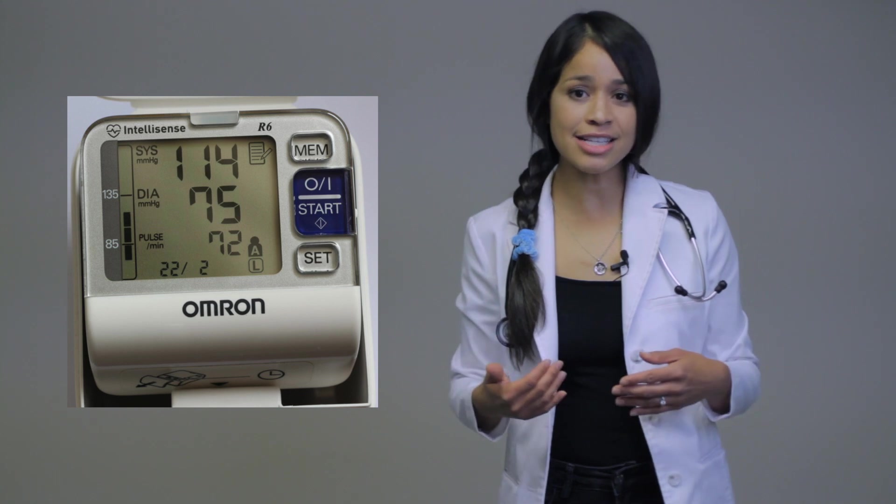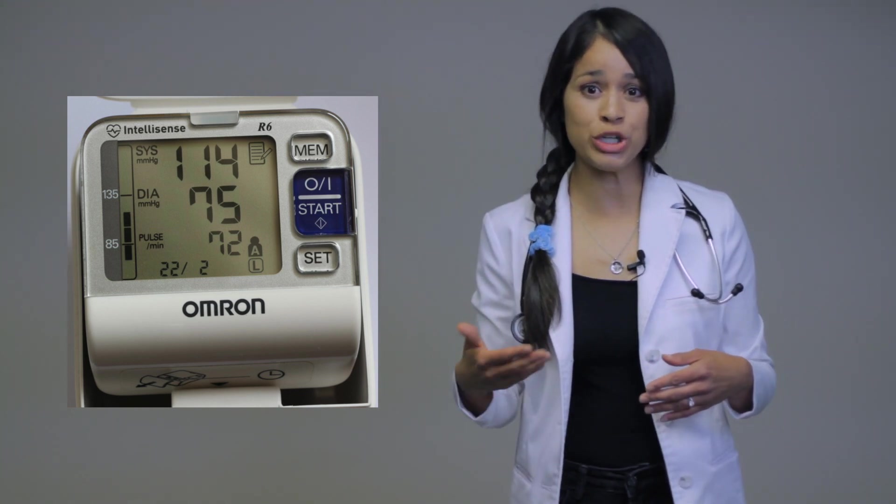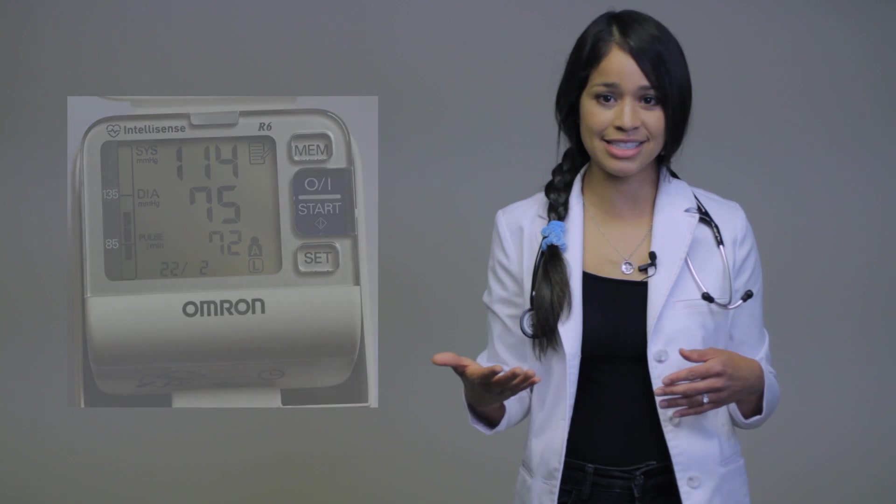And the diastolic blood pressure is the number on the bottom, which is when your heart relaxes. So we have a blood pressure reading. Now, what do those numbers mean?